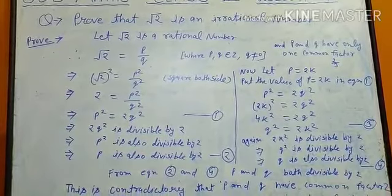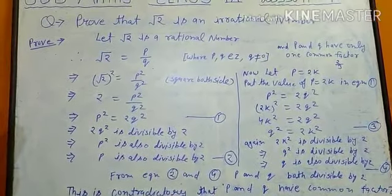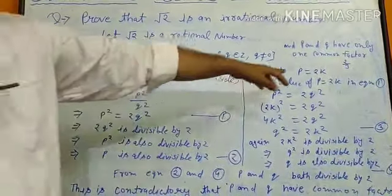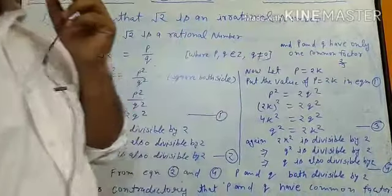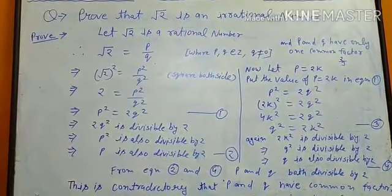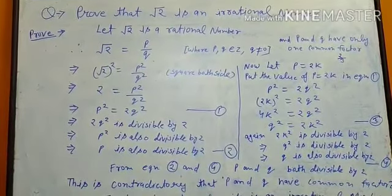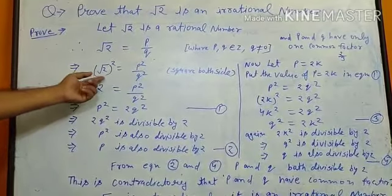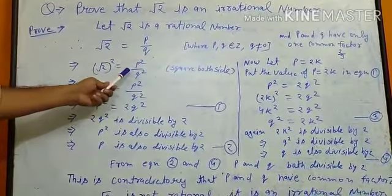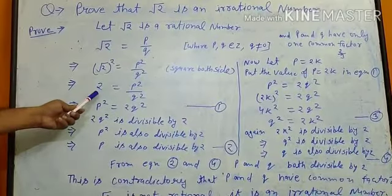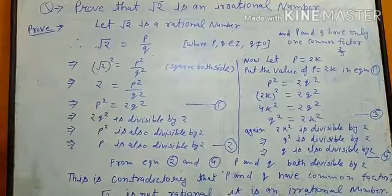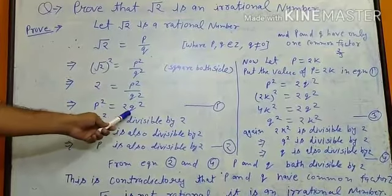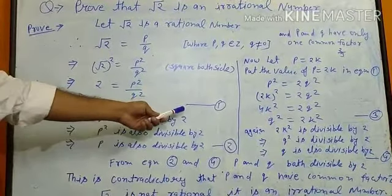Another condition of the definition is that p and q have only one common factor, that is 1. For example, 2/3 — here 2 and 3 have only one common factor which is 1. So we assume root 2 equals p/q, meaning it is rational. Squaring both sides gives 2 = p²/q², and by cross multiplication we get p² = 2q². This is equation number 1.